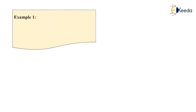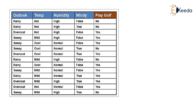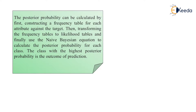Now we'll see an example using the weather dataset. This dataset has five attributes: four independent attributes and one dependent attribute — play golf or not. The posterior probability can be calculated by first constructing the frequency table for each attribute against the target, then transforming the frequency tables to likelihood tables, and finally using the Naive Bayes equation to calculate the posterior probability for each class. The class with the highest posterior probability is the outcome of the prediction.